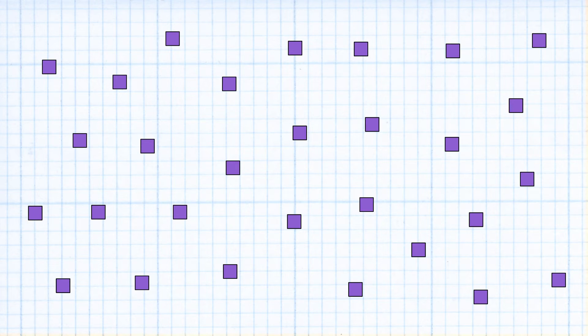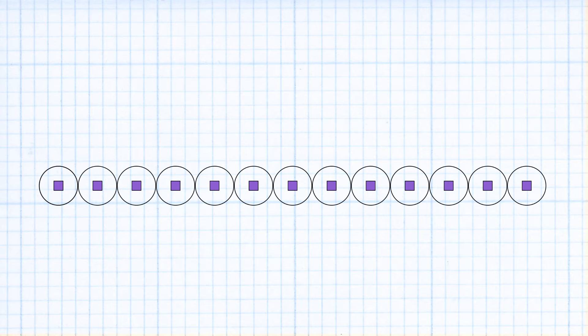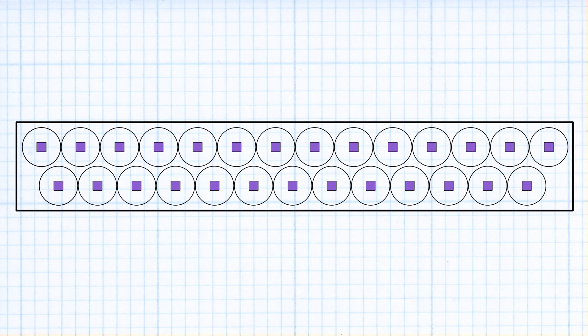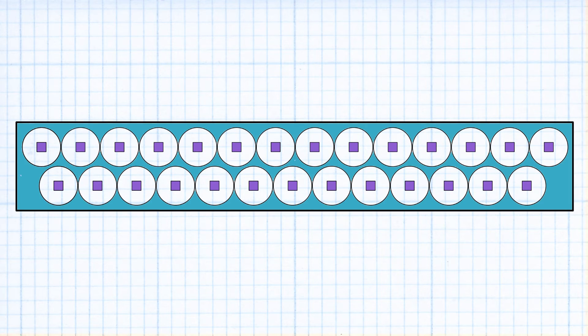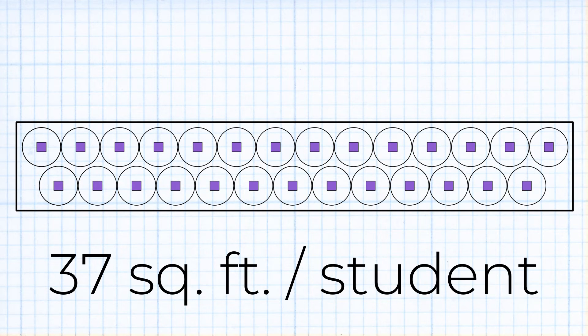Kids aren't just in a blank void either. They have to be in a room. And these circles won't pack perfectly into a room, but let's see what we can get. If we do one row of 13 and one row of 14, that gives us a room. This room is going to have some empty space, and now we need a room of 1008 square feet, which is about 37 square feet per student.